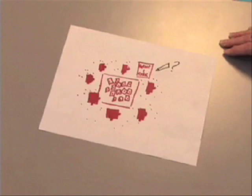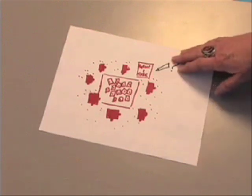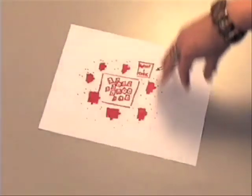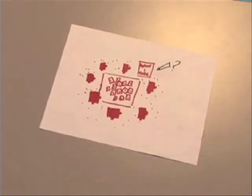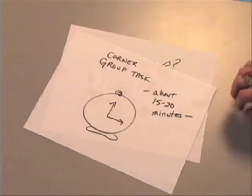For example, they might have to apply their piece of the content to a case study, or come up with examples of how this piece might work in the workplace, or complete a few practice questions using their piece, anything to get them talking about and using the content for better comprehension. This part of the jigsaw will take about 15 or 20 minutes, depending upon the complexity of the content.